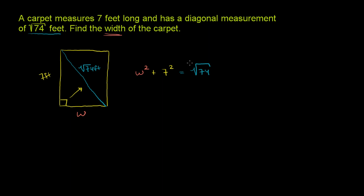And then we get W squared plus 49 is equal to the square root of 74 squared. Well, that's just going to be 74. We can subtract 49 from both sides of this equation so we have just W squared on the left-hand side. Subtract 49 from both sides.